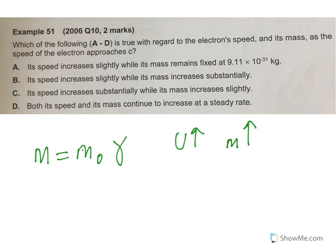So we're talking about the speed approaches c and so what Einstein proposed was this: as the speed goes up, the mass goes up. Alright, so let's have a look. Is the speed increases slightly while its mass remains fixed at that? Well, it's not really clear there, because the question is asking as it approaches c. So its speed increases slightly - that really doesn't help us at all. So I'm thinking no.